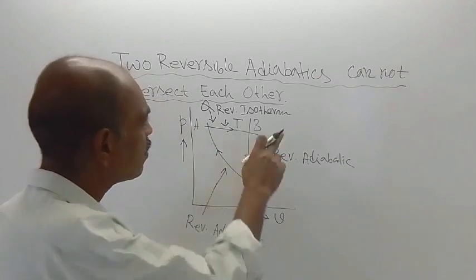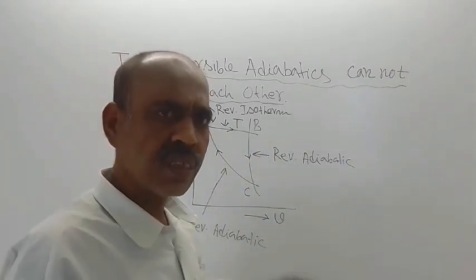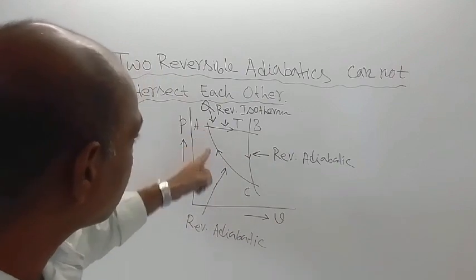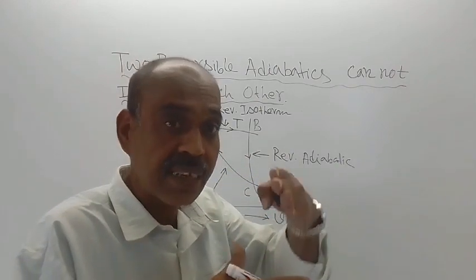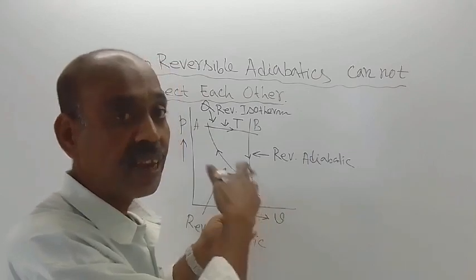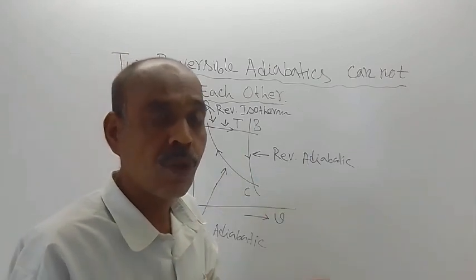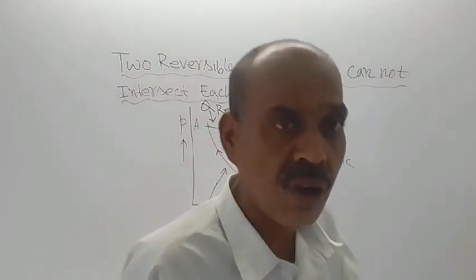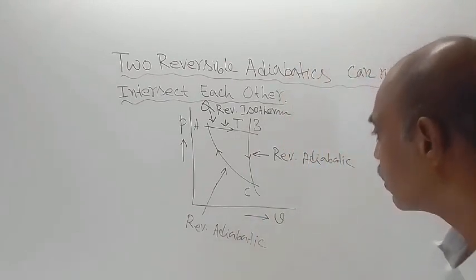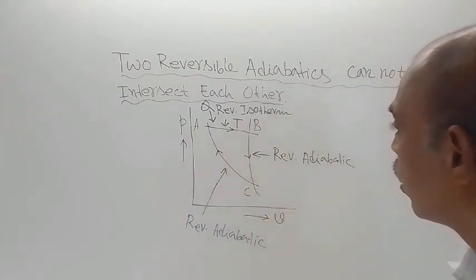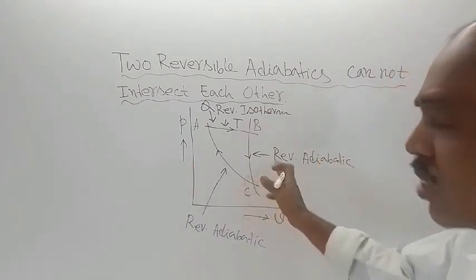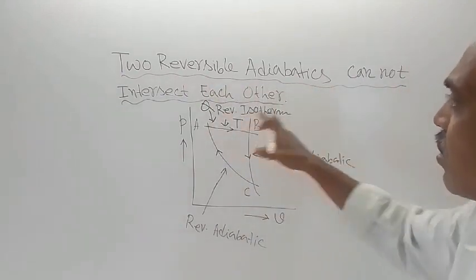Since violation is not possible, something here is impossible. What is impossible? Not the reversible isotherm — that is possible. What is impossible is our assumption that these two reversible adiabatics have intersected at a point — that is impossible. This impossible assumption led to the conclusion that Kelvin-Planck's statement is being violated. Therefore, our assumption of intersection of these two reversible adiabatics is impossible, and they cannot intersect each other. That was the topic: two reversible adiabatics cannot intersect each other.